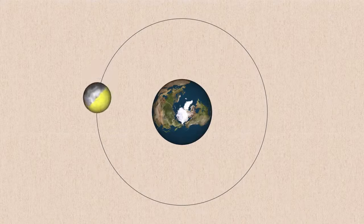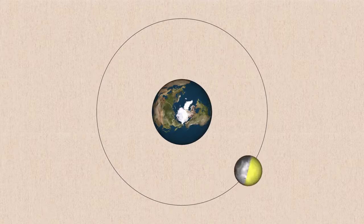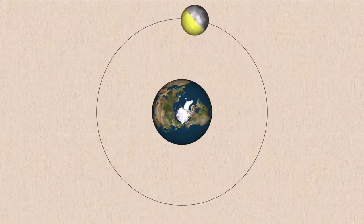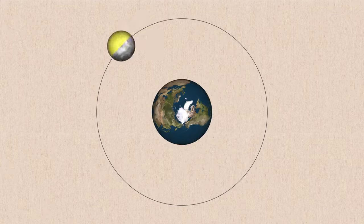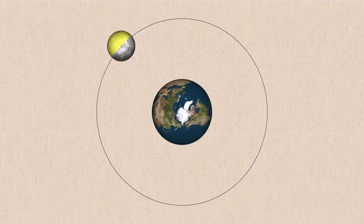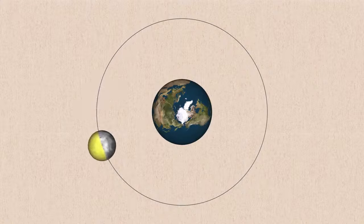On the other hand, if the moon executed several rotations on its axis as it revolved around the earth once, then we would also be able to see both the near and far sides of the moon. So how is it that we could only see the near side of the moon, no matter where it is in its revolution around the earth? And the answer is timing: the rotation period is exactly equal to its orbital period.